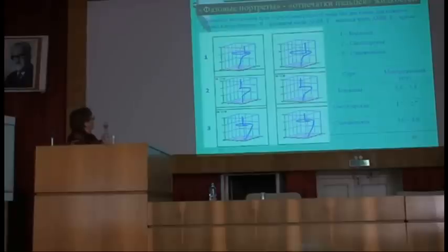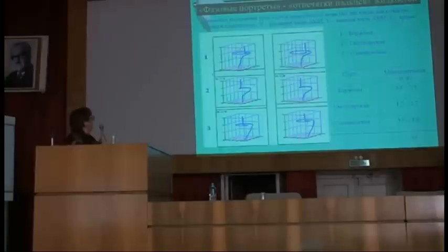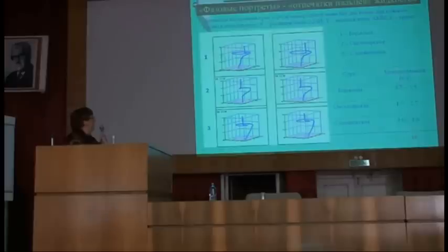Вот примеры из реальной жизни. Показана динамика высыхания трёх сортов минеральной воды — по две капли для каждого сорта — в координатах реальная/мнимая часть АМИ и время, в виде таких завитков. Размах этого завитка соответствует степени минерализации.